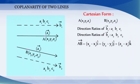AB vector is equal to (x2 minus x1) i cap plus (y2 minus y1) j cap plus (z2 minus z1) k cap.